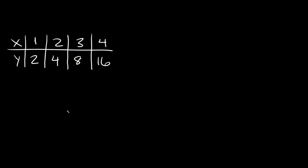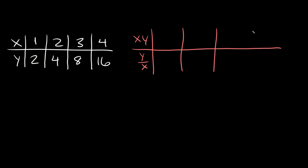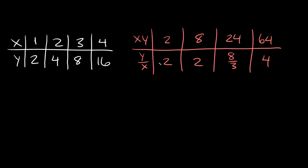Here's the last table. We make a new table to find products and ratios. Multiplying: 1 times 2 is 2; 2 times 4 is 8; 3 times 8 is 24; 4 times 16 is 64 — no pattern there. Checking ratios: 2 over 1 is 2; 4 divided by 2 is 2; 8 divided by 3 is 8/3; 16 divided by 4 is 4 — no pattern on the bottom either. Since there's no pattern on the top or the bottom, this table shows neither direct variation nor inverse variation.